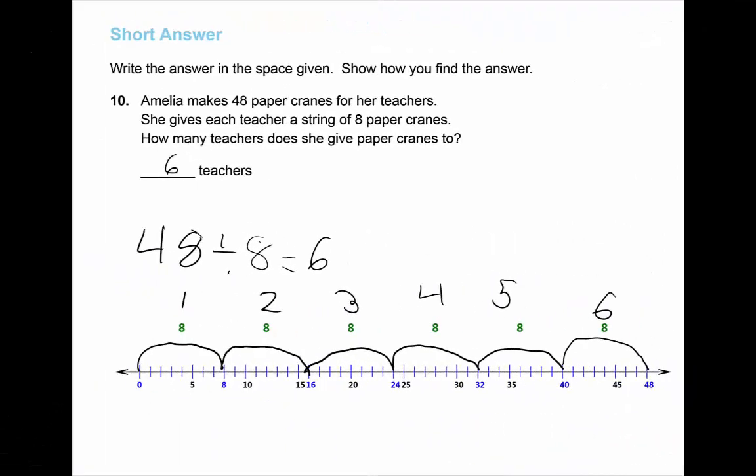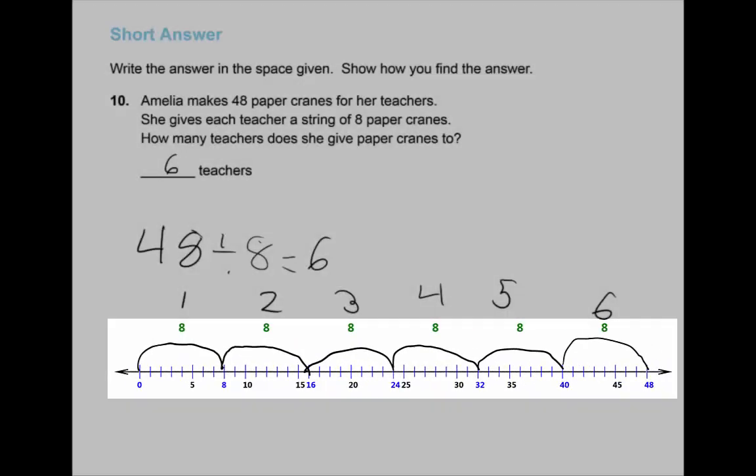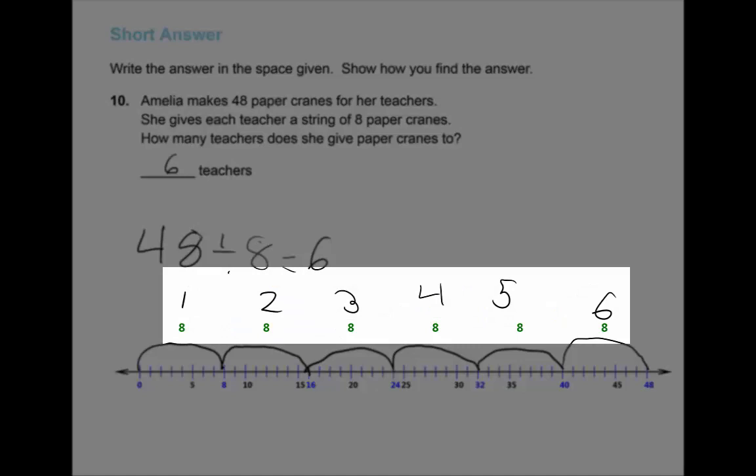This student created a number line up to 48 and made jumps of 8 until the end. She counted the jumps she made to get the quotient of 6.